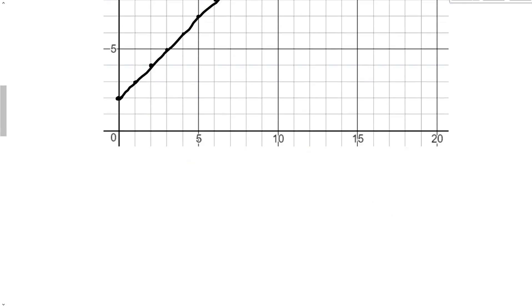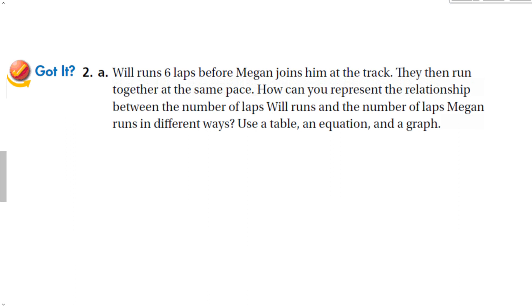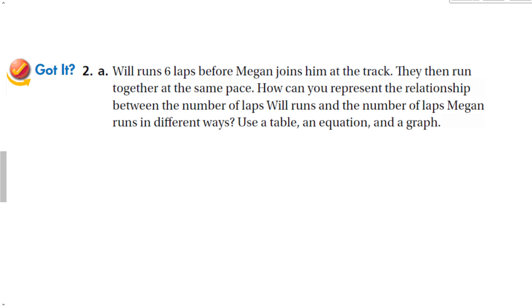Let's look at a got it problem. Will run six laps before Megan joins him at the track. Then they run together at the same pace. How can you represent the relationship between the number of laps Will runs and the number of laps Megan runs in these same different ways? So we're going to get Megan and we're going to get Will. And when Megan finishes her first lap, Will has already run six before it. So now he's just finishing lap number seven. When Megan does two, Will is eight, three, nine, four, ten, five, eleven, and so on and so on and so on.